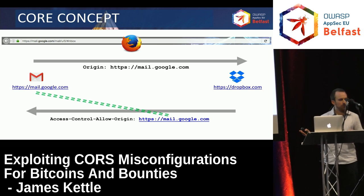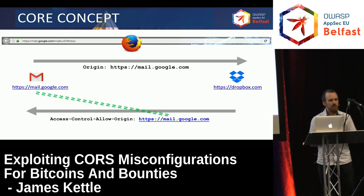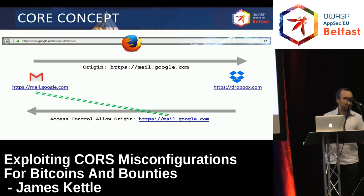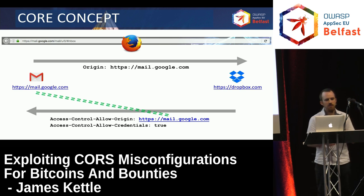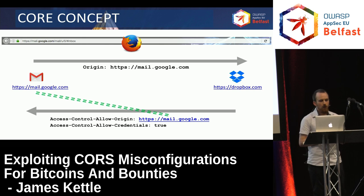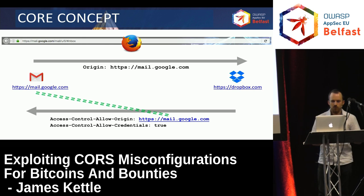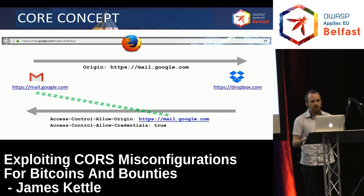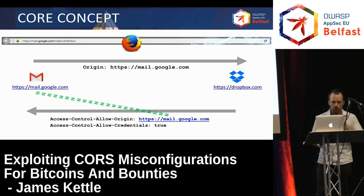By itself, that header only gives access to users' public files on Dropbox. If Dropbox wanted to let Gmail embed users' private files, they would have to add the additional allow-credentials header and set it to true. That means the web browser will send the user's cookies when it fetches the file, and so private files can be accessed too.